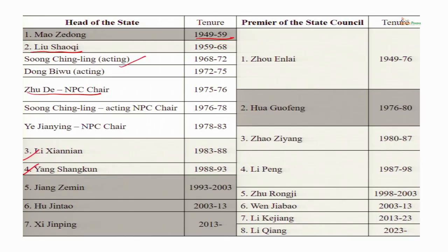As party elders, Li Xiannian and Yang Shangkun played a very important role and were part of the advisory council led by Deng Xiaoping, but they were not directly ruling China. Instead, the premier of the state council looked after the administrative affairs of the state. In 1993, Jiang Zemin became the president of China. He already was the General Secretary of the Communist Party and was also the chairman of the Central Military Commission. Thus all three important positions came under one person, making him the most powerful person in China.